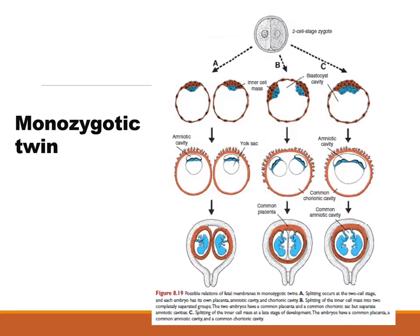Monozygotic twins or identical twins arise from one oocyte fertilized by one sperm, resulting in the development of one zygote. However, this zygote, in early stages of development, eventually splits to form another zygote. In figure A, the splitting happens at a very early stage of development, so the two zygotes each end up with their own amniotic cavity, own chorion, and own placenta. In figure B, the splitting occurs a bit later, so they end up with a common chorionic cavity but separate amniotic cavities, and they also share the same placenta.